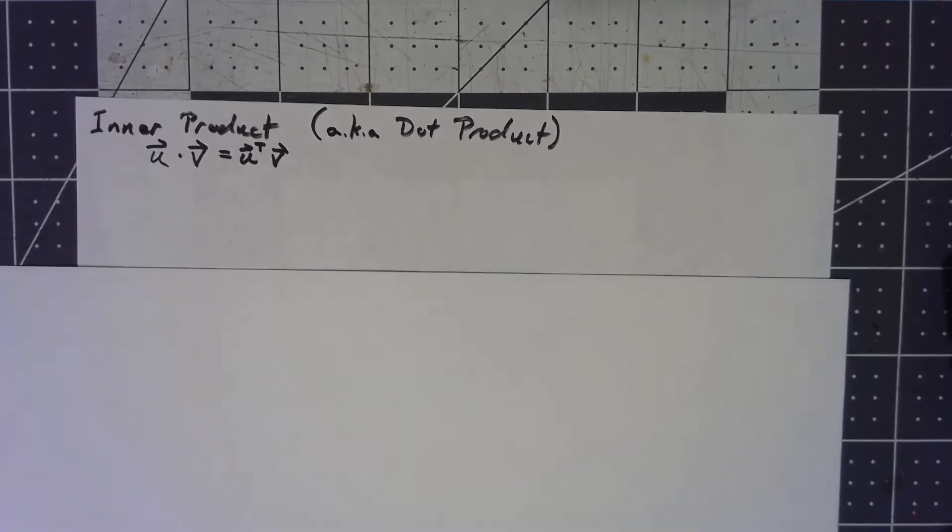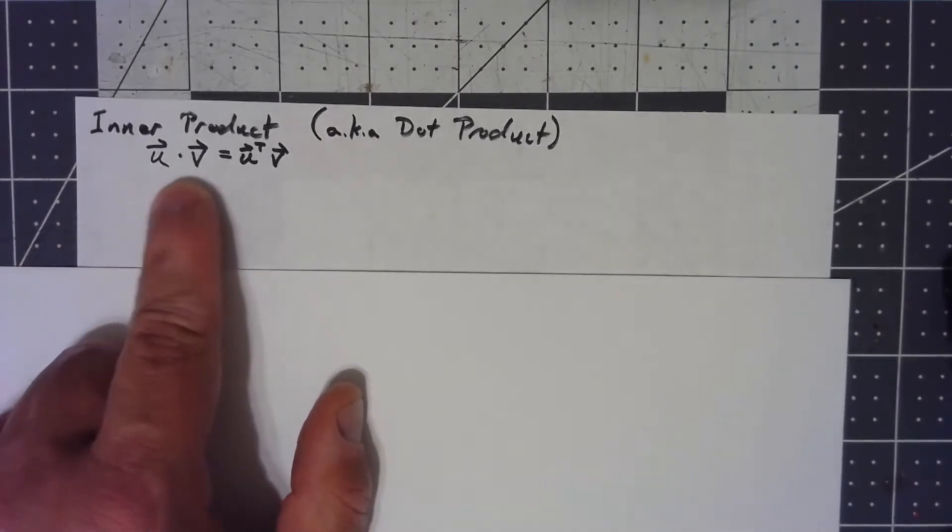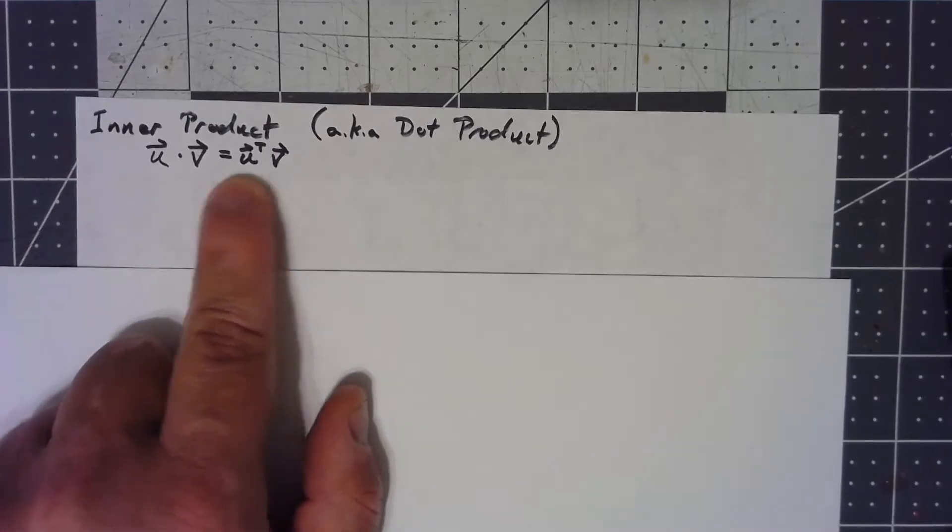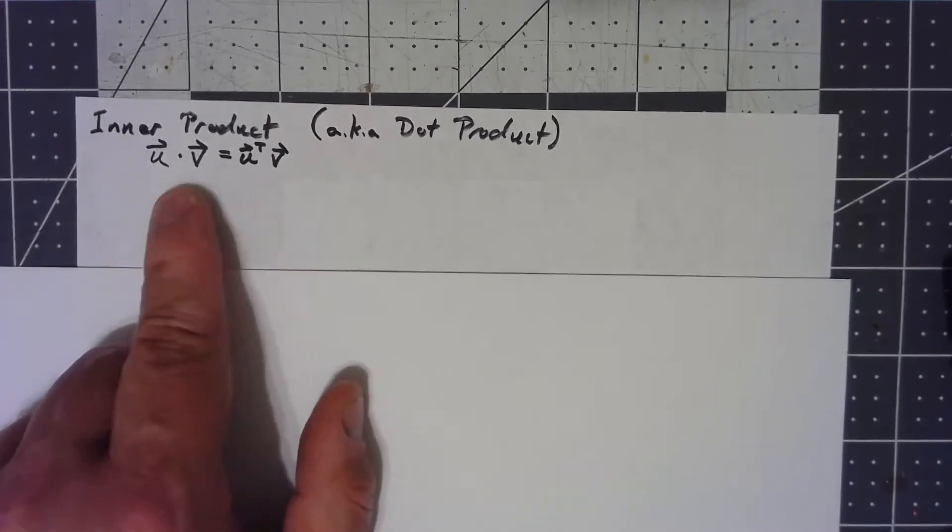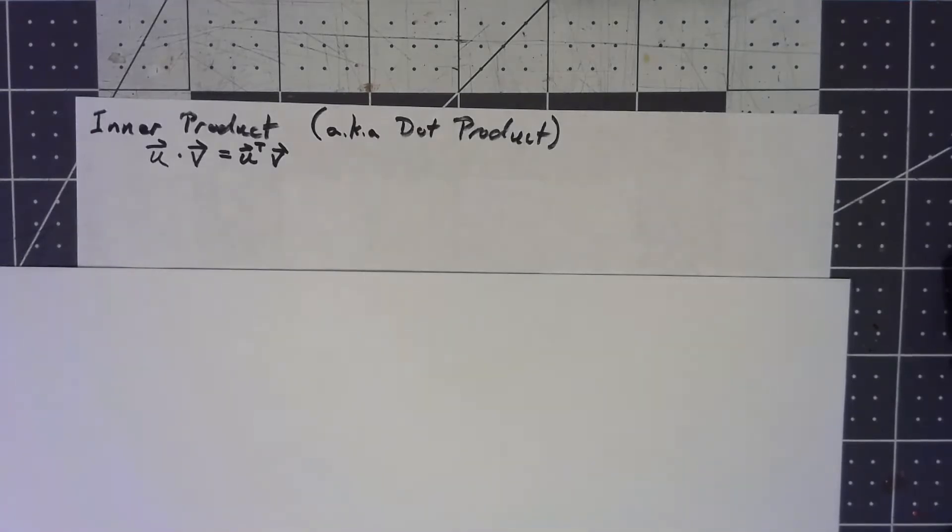But the whole idea of what an inner product is, is that we take u dot v, the inner product of u and v, where these two things are vectors of the same size, and we're going to get it's u transpose times v.